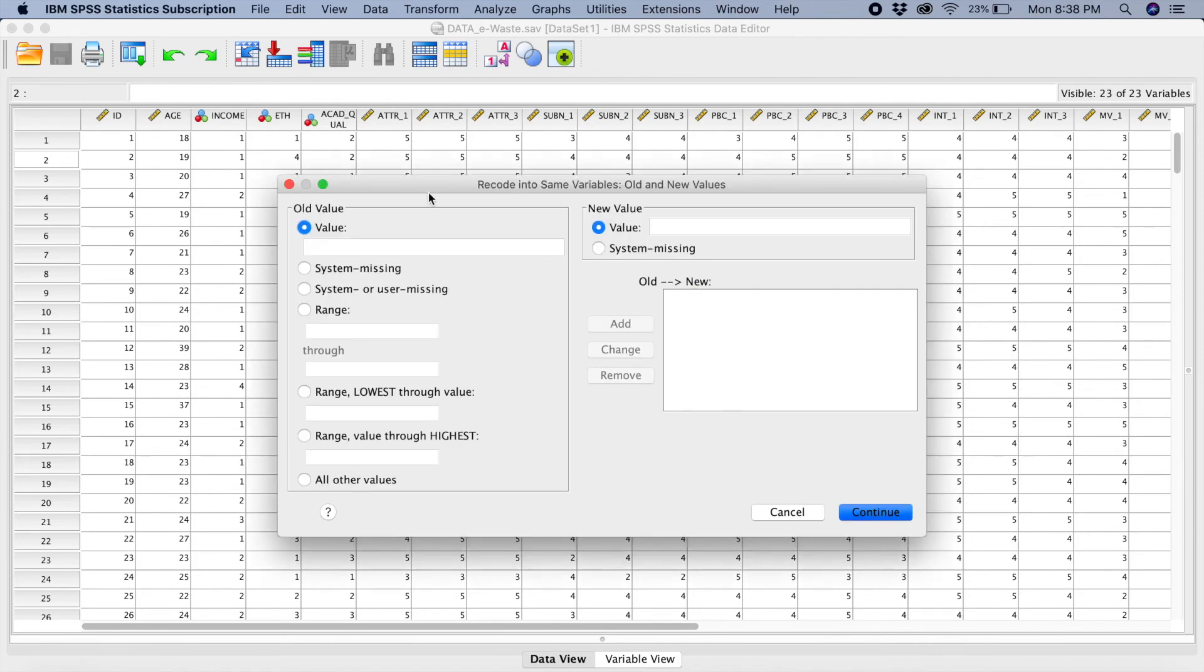So what we want to do? We want value number 1 to become value number 5. Add. We want value number 2 to become value number 4. Value number 3 will be value number 3. Then we want value number 4 to become value number 2. Add. And we want value number 5 to become value number 1. We add.